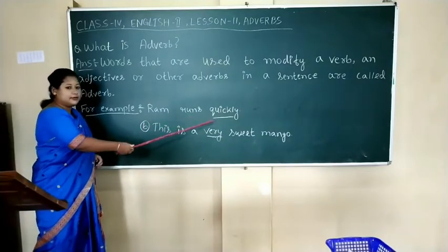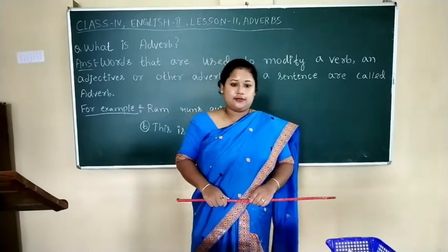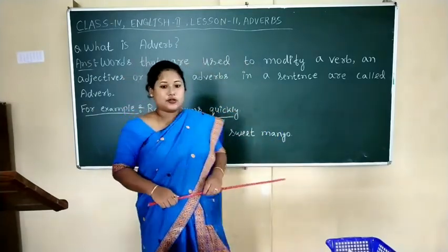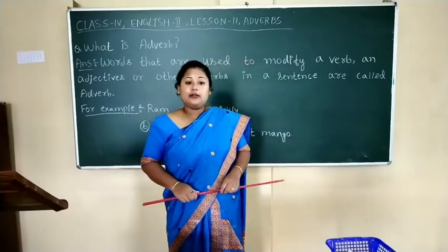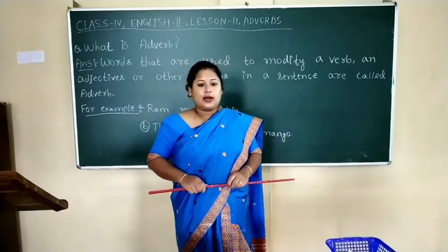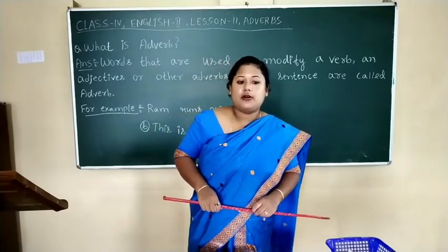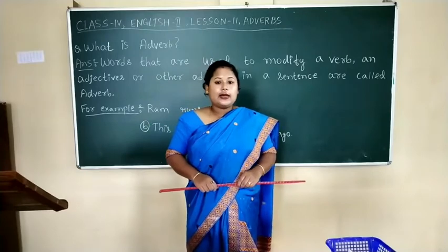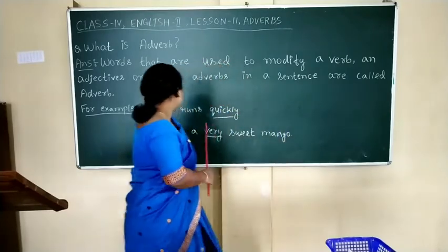For example, Ram runs quickly. In this sentence, quickly shows how or in what manner. Here, I have used quickly for running. Quickly is modifying the verb run.